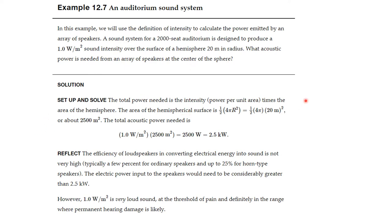Well, the total power needed is the intensity power per unit area times the area of a hemisphere. The area of a hemisphere surface is half of the surface area of the sphere. So this is 1.5 times 4 pi r squared where r is 20 meters. So we throw this into a calculator and calculate. So this area is 2,500 square meters. So the total acoustic power needed is 1.0 watts per meter squared times 2,500 square meters. The meter squareds cancel and we'll get 2,500 watts or 2.5 kilowatts.